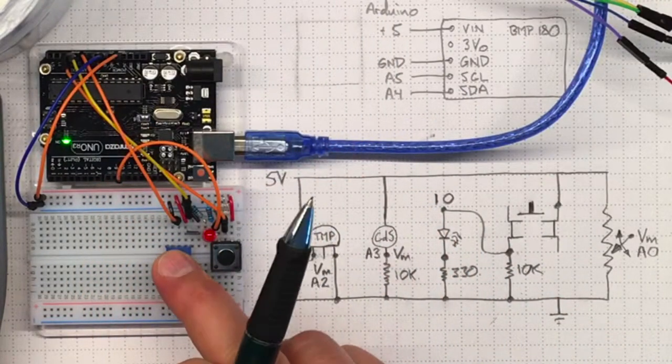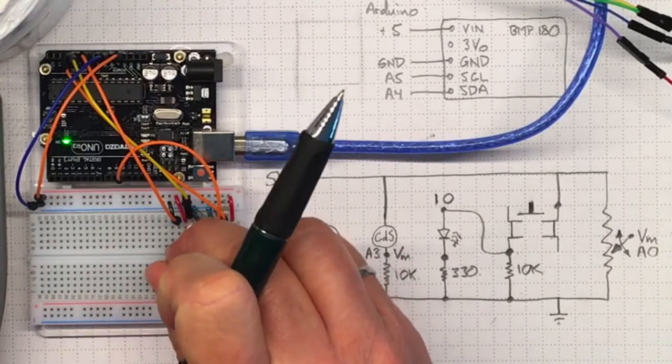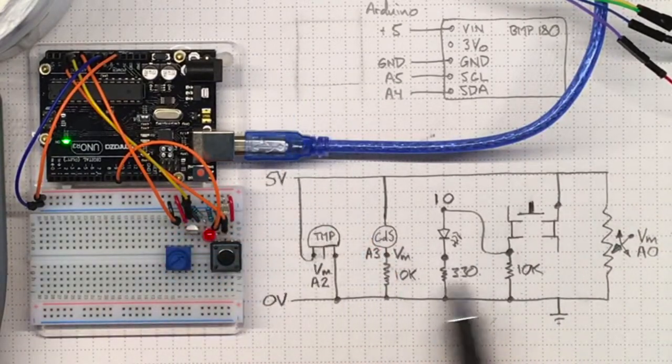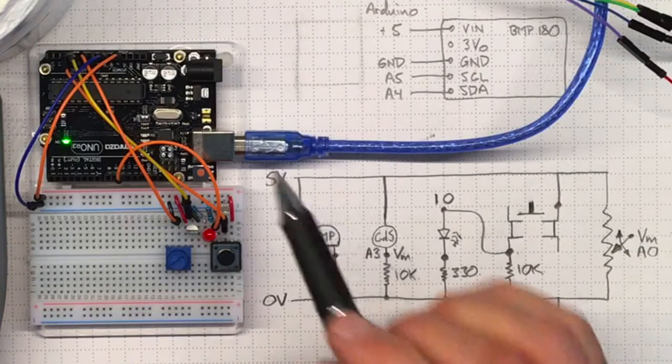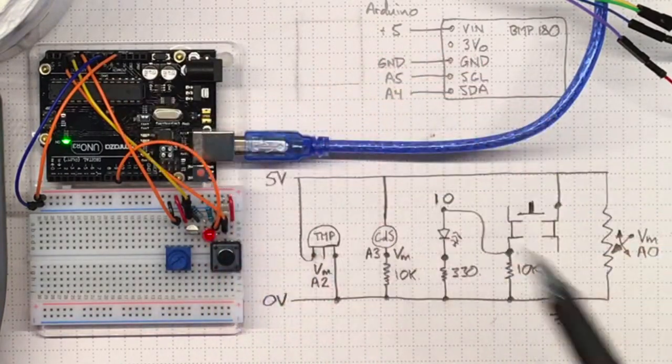A potentiometer that we can adjust the voltage on, and the output from that potentiometer going to analog pin A0 over here.